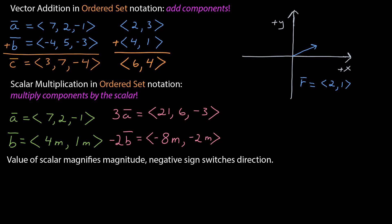For example, here I have a vector in ordered set notation of 2 and 1. Negative r, then, would be negative 2, negative 1, which represents the vector of the same magnitude but pointing in the opposite direction.